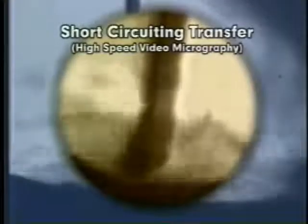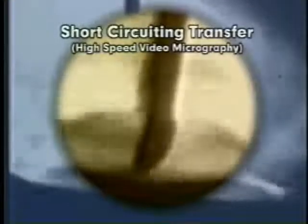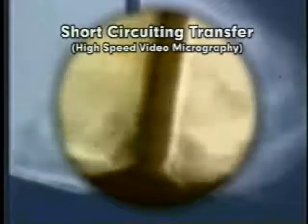The short circuiting transfer mode encompasses the lowest range of welding currents and electrode diameters associated with gas metal arc welding. Metal is transferred from the electrode to the work only during intervals of controlled short circuits. This mode is generally suited for joining thin sections, bridging large root openings, and for welding in all positions.